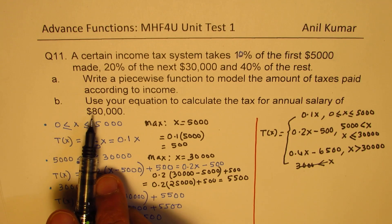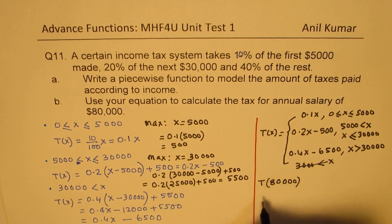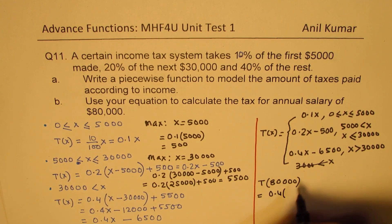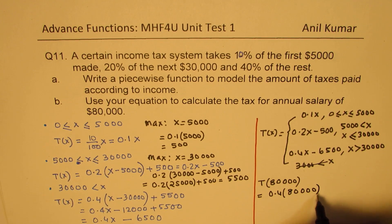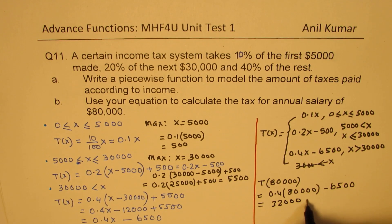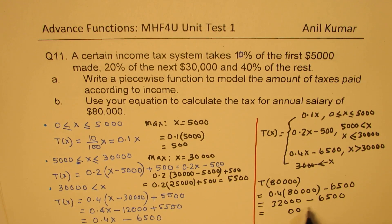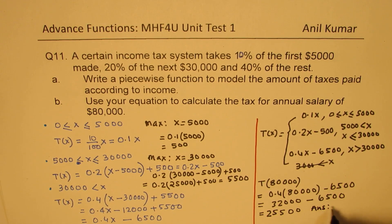The second part of the question is: find the tax for an income of $80,000. Since 80,000 falls in the last bracket, it equals 0.4 times 80,000 minus 6,500. That gives us 32,000 minus 6,500, which equals $25,500. So the tax on an income of $80,000 is $25,500.